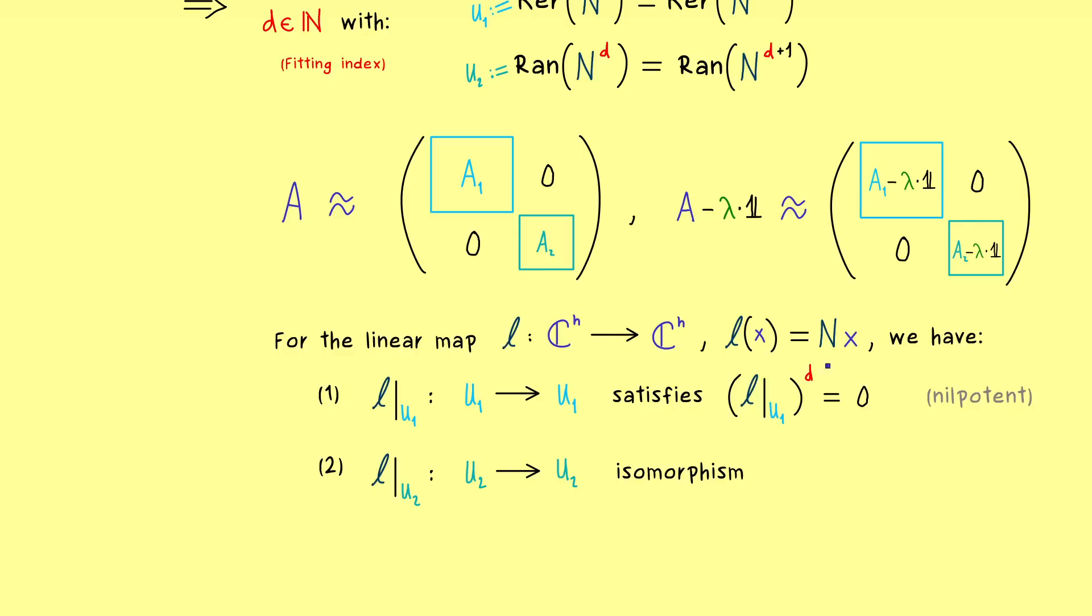However, we immediately get that these block matrices are matrix representations of our abstract linear maps here and there. So for example, the second one here has the matrix representation A2 minus lambda identity. And since the linear map is an isomorphism, we know that the matrix representation has to be an invertible matrix.